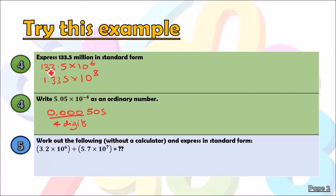We copy the rest of the digits: 505. This isn't the official mathematical method, but it's a convenient way to see that four zeros gives us the correct power of four. Now let's try this next one — it'll take a bit more time. Work out the following and express in standard form.